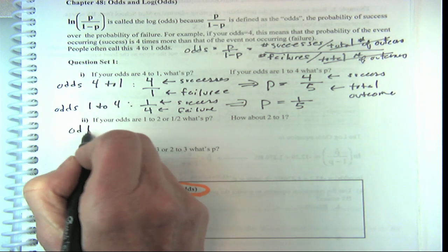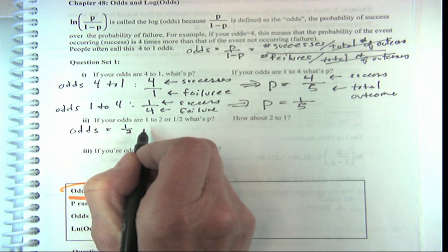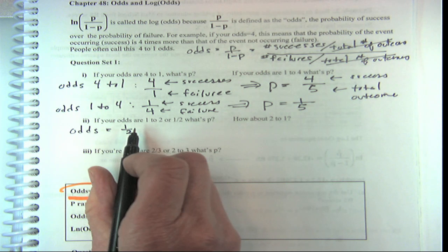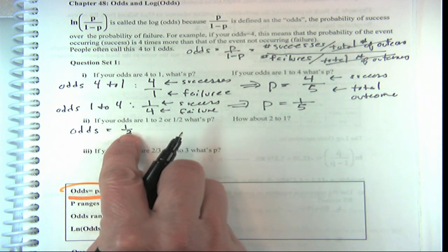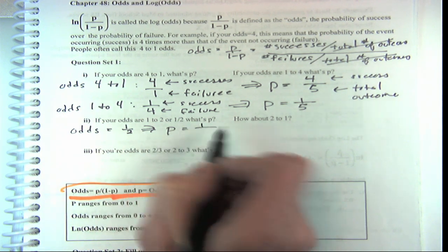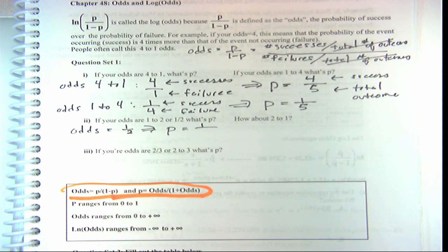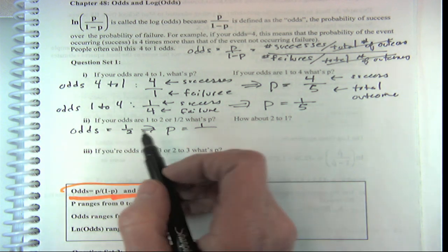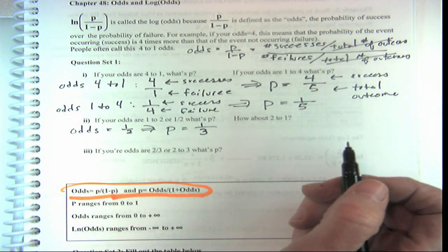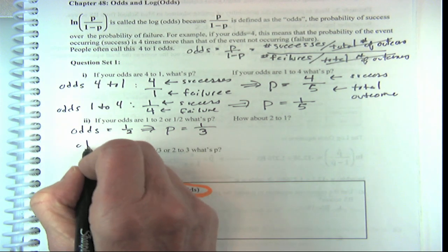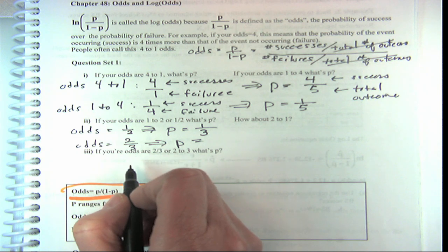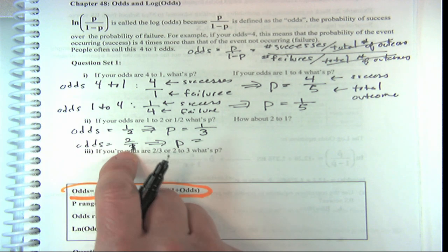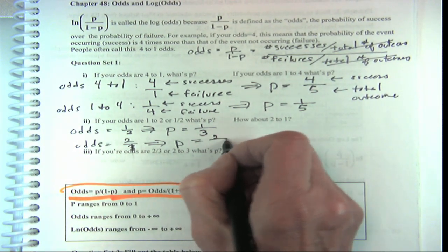If odds are 50-50, your probability is 0.5. But odds of one-half means 1 to 2 odds — 1 success and 2 failures — so the probability is 1 over 3. If your odds are 2 to 1, the probability is 2 over 3. This is pretty simple: the number of successes over the total number of outcomes.